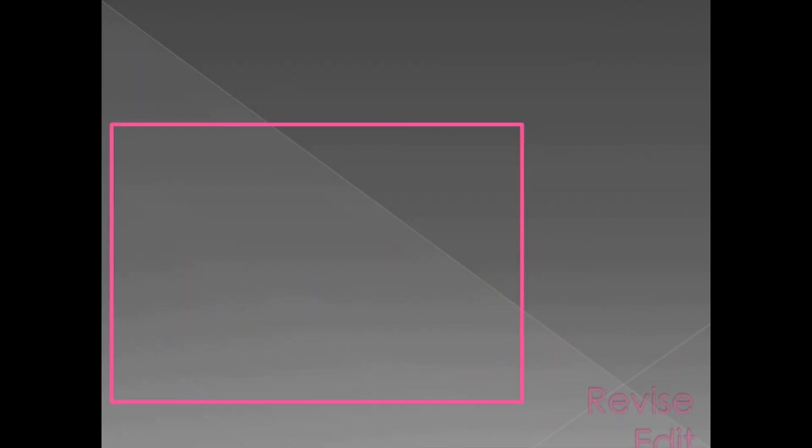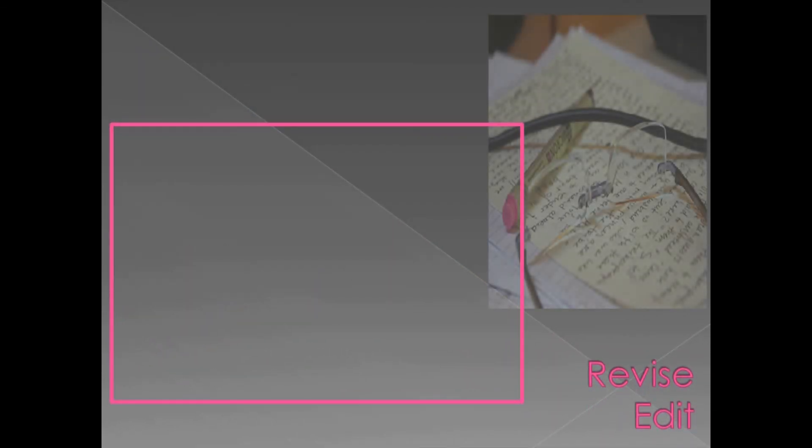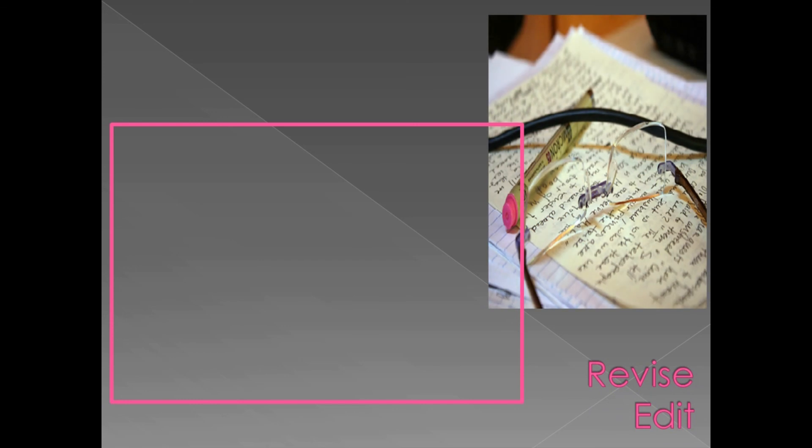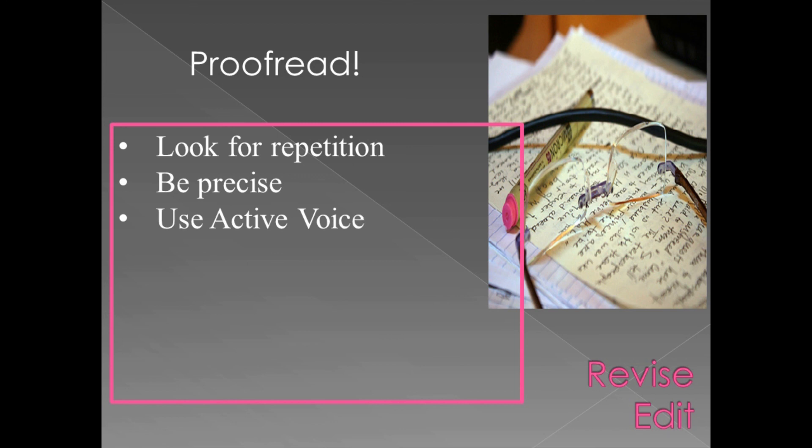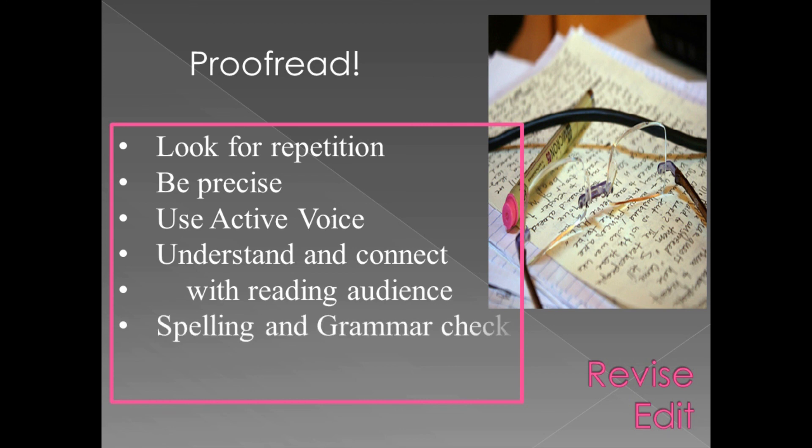Revisions and edits. You will want to proofread your paper and be alert for such things as repetitiveness, using precise wording and language, avoiding passive voice, connecting with the audience by understanding their approach to your narrative, spell and grammar check. I suggest a read aloud. It's easier to hear mistakes than to see them sometimes. And if it's possible, have one of your peers review it.